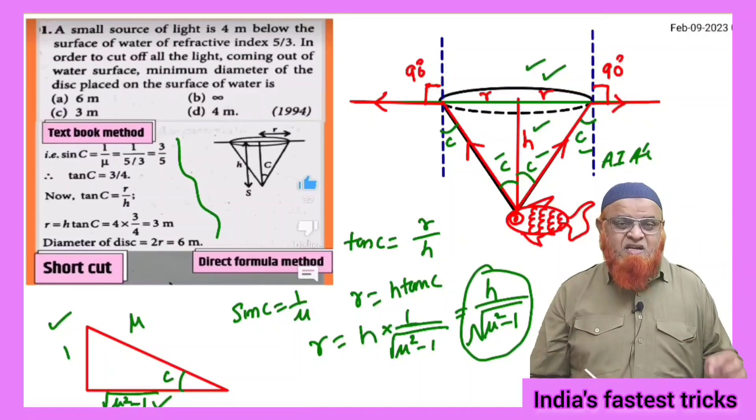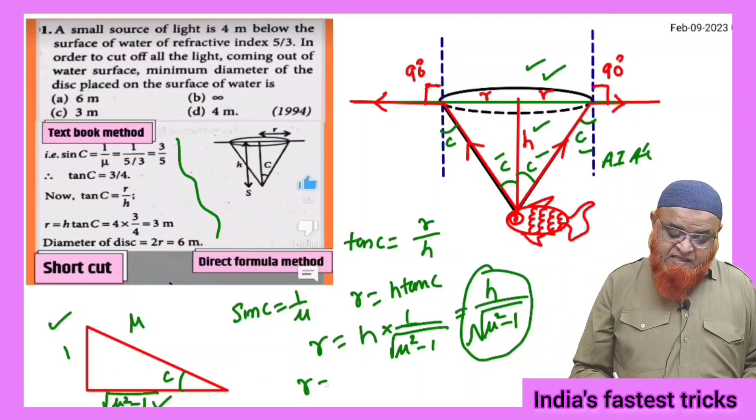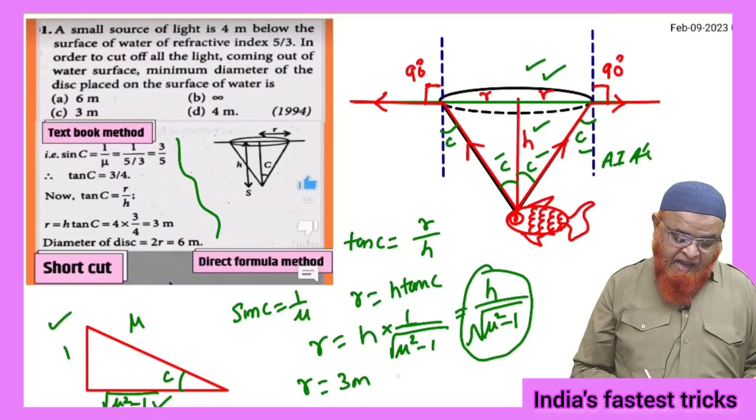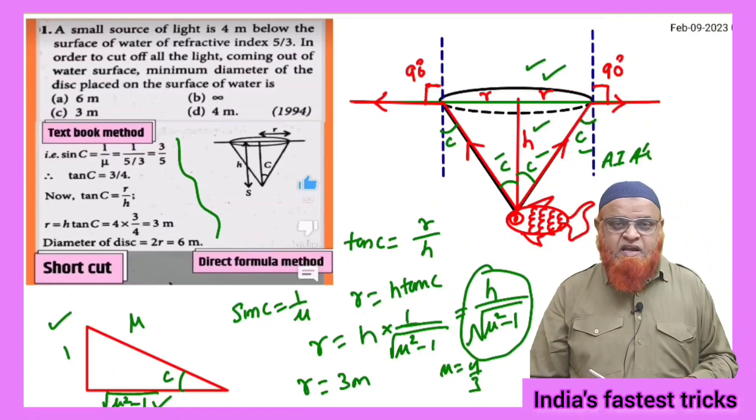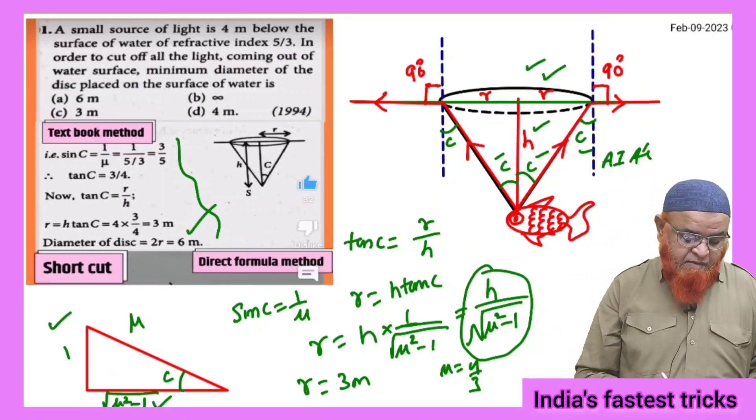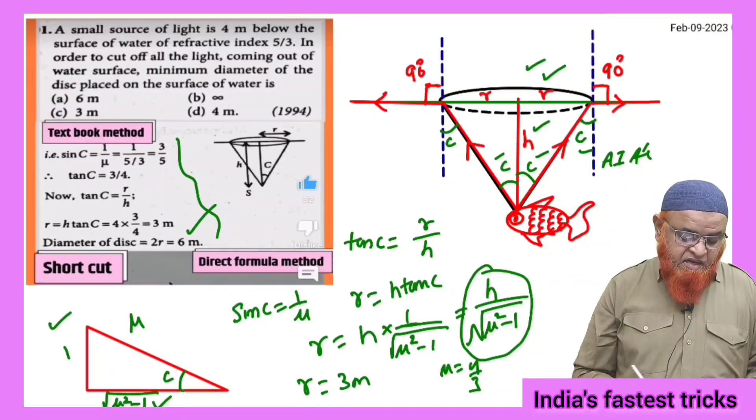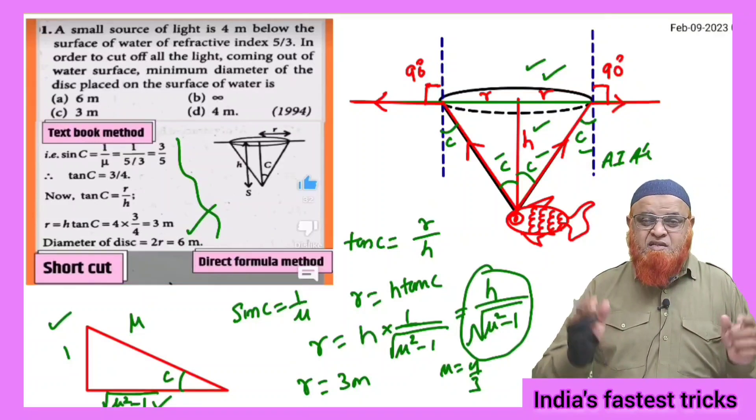You can use this formula and substitute the values and get the answer. That is you will be getting here R as 3 meters when you substitute the value of mu here. Mu is nothing but 4 by 3. So we get the radius as 3 meters, then you can find out the diameter and here the diameter is double times of the radius which is 6 meters is going to be your answer.